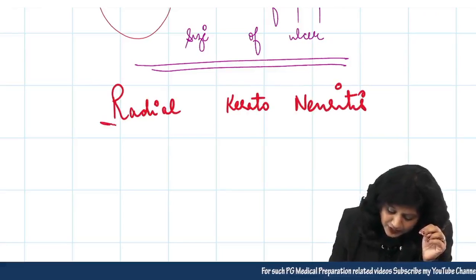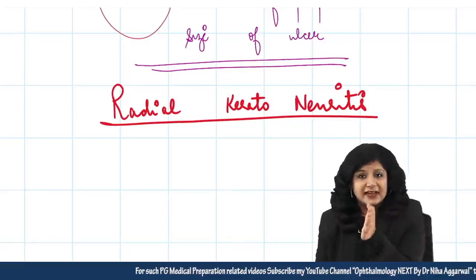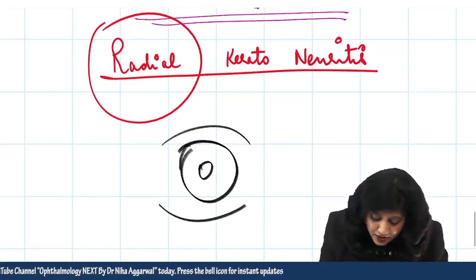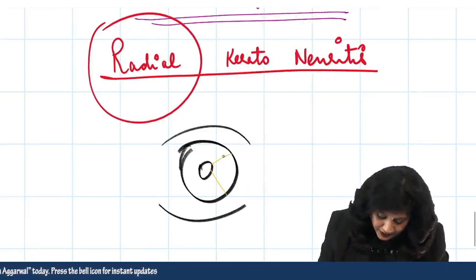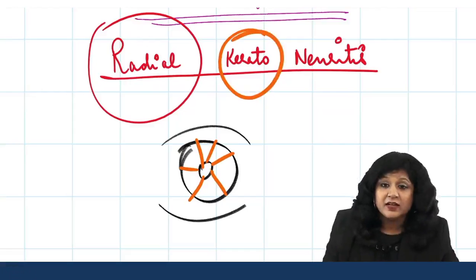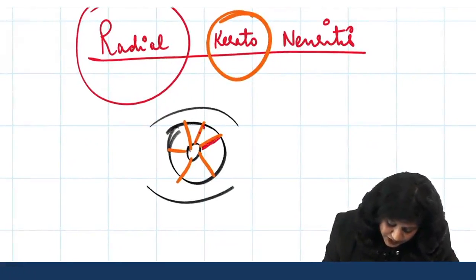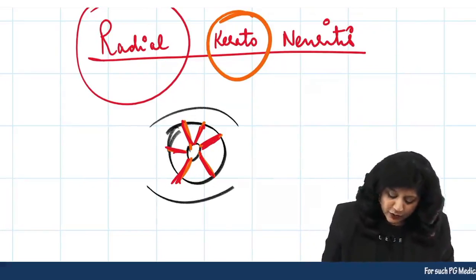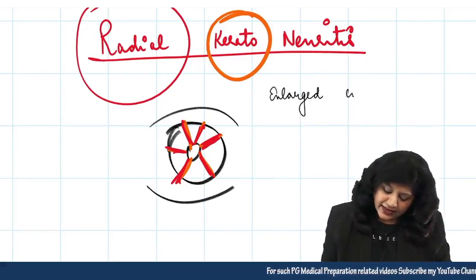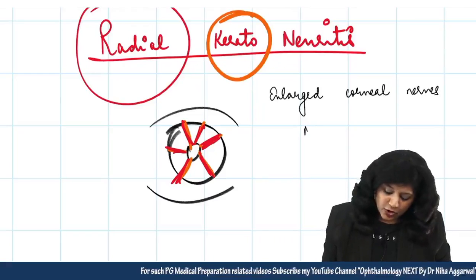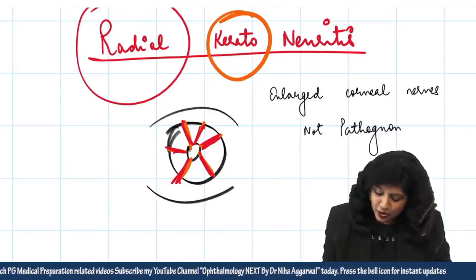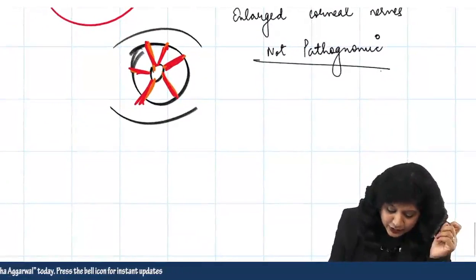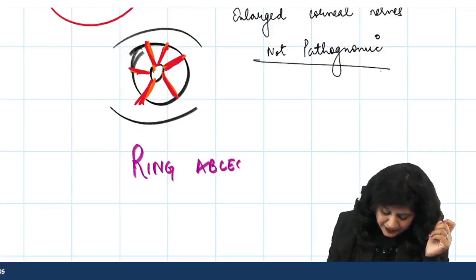The second important feature is radial keratoneuritis. The corneal nerves run in a radial fashion, and in Acanthamoeba keratitis, these nerves become inflamed — 'keratoneuritis.' Neural pain is always severe. You get enlarged corneal nerves visible on examination. However, enlarged corneal nerves are not pathognomonic of Acanthamoeba. Ultimately, the final feature is the ring abscess or ring infiltrate.